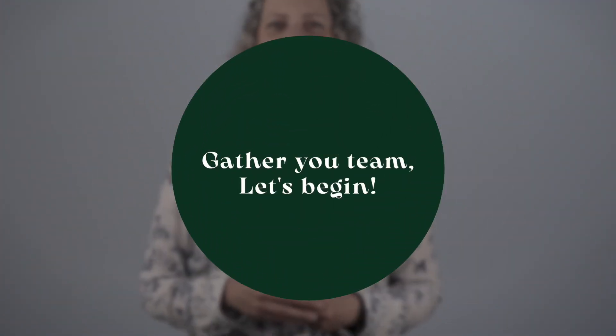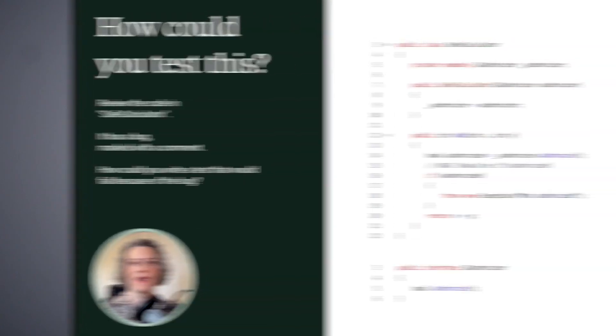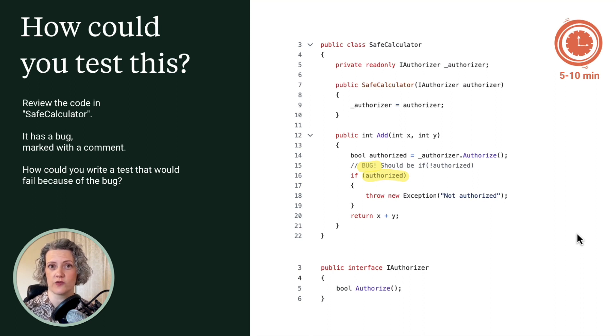Hi, I'm Emily Bates. Welcome to this guided learning hour. Today's topic is test design — specifically test doubles and how they can help you find bugs. We're using a shared online whiteboard that everyone should have access to. To begin with, I've got some code for you to review. This class, SafeCalculator, has a bug in it which I've marked with a comment, and you'd like there to be a unit test that would fail because of this bug.